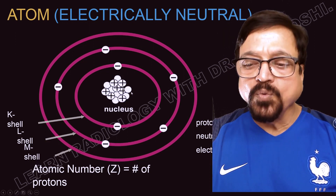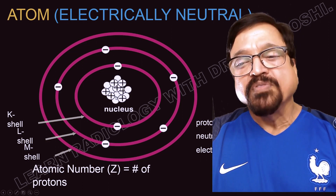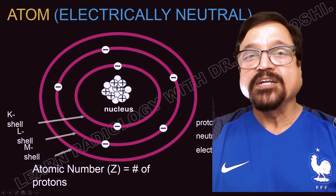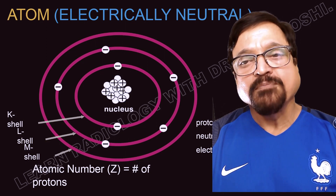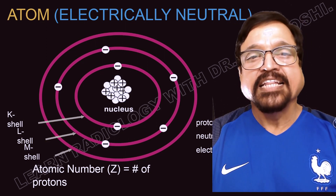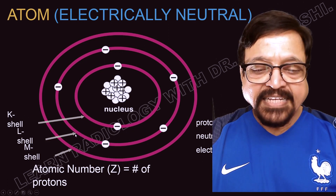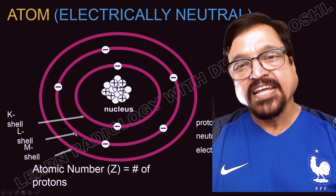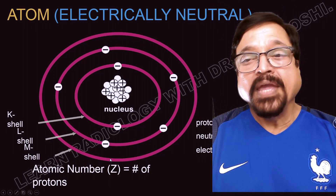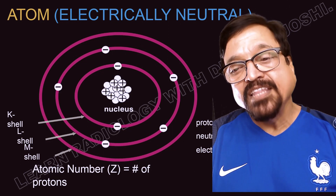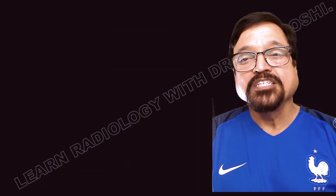Let us understand how the atom is formed. There is a nucleus which has a positive charge. These positively charged protons are held together along with neutrons, and a large amount of force is required to bind them. The atom also has electrons, which are negatively charged and move around in different shells. Each shell has a different energy level. The shell nearest to the nucleus has higher energy, and the outer shells have lower energy. The K-shell is closest and has the highest energy. If any electron is moved, the energy transfer will correspond accordingly — electrons closer to the nucleus require and release more energy.